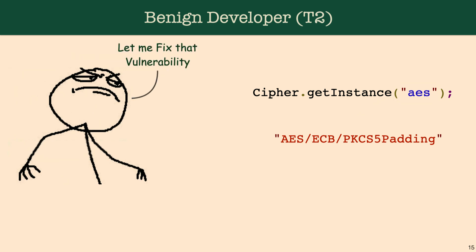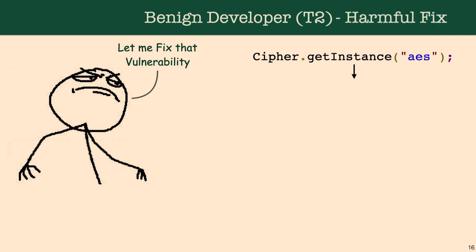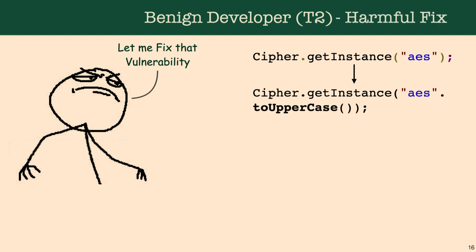Next we have threat model actor 2: the benign developer with a harmful fix, who is trying to rely on cryptodetectors and trying to fix things but doesn't really know too much about them anyway. In this case, he will look at the documentation and notice that the convention is to use uppercase and try to emulate that, but essentially he is not fixing the vulnerability — he is just removing the error.